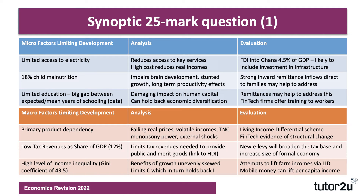On the macro side, primary product dependency — the focus of extract one — would be a clear macro factor limiting development. A high percentage of Ghanaian exports are precious metals, crude oil, and cocoa. There is a risk of falling real prices for these commodities, and if prices go down or are volatile, that leads to volatile incomes. Cocoa farmers only get 7% of the global cocoa-chocolate industry, meaning they're up against the monopsony power of transnational corporations. Being highly dependent on primary products makes the economy vulnerable to external shocks, including recessions, pandemics, civil war, and other factors.